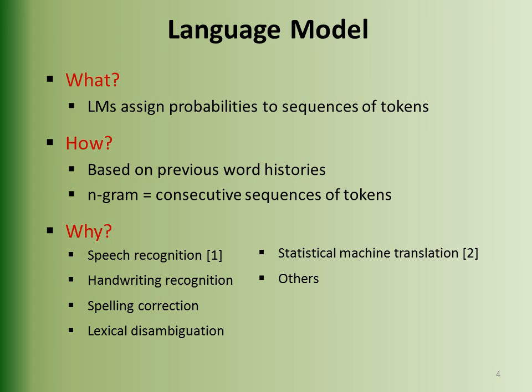What are language models? A language model is basically a medium to assign probabilities to a sequence of tokens. Tokens are the total number of words, and it is based on previous word histories. N-gram is the consecutive sequence of tokens. Applications include speech recognition, handwritten recognition, spelling correction, lexical disambiguation, statistical machine translation, pattern matching, and automatic authorship attribution.